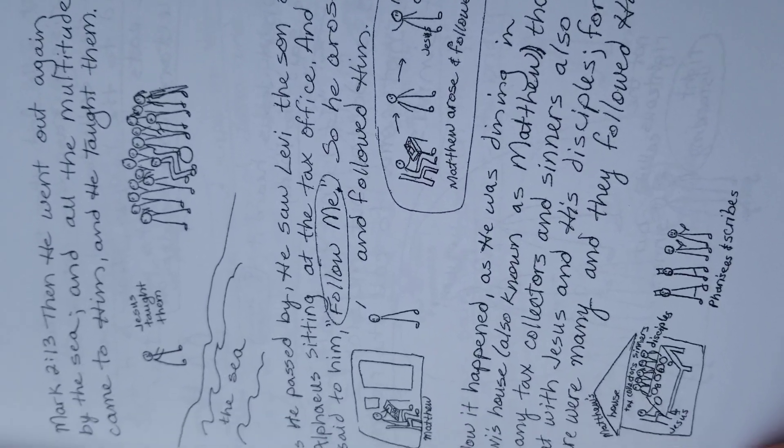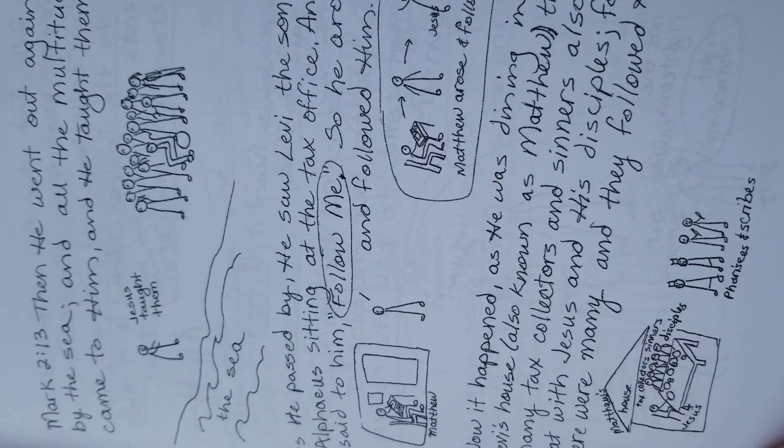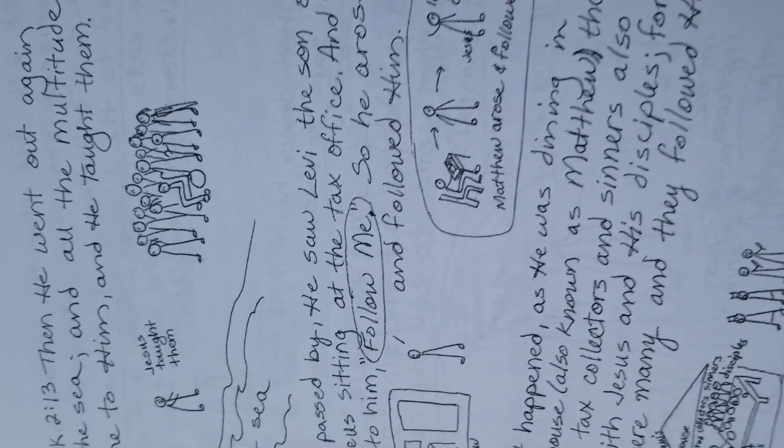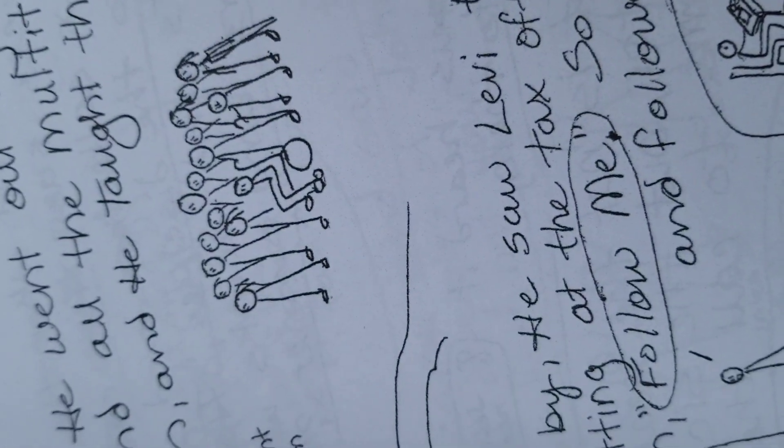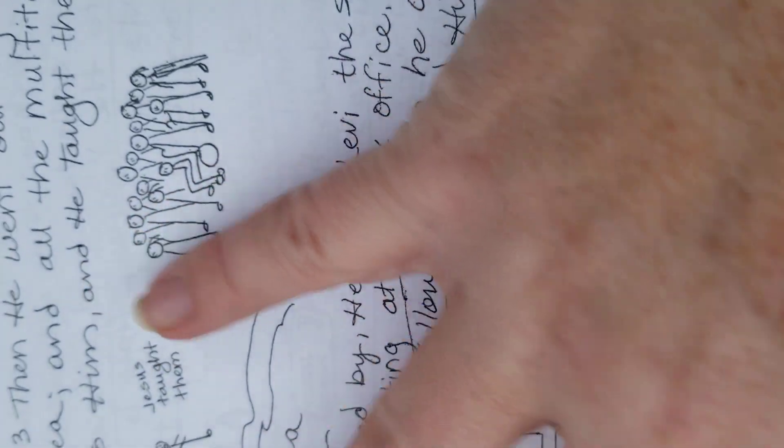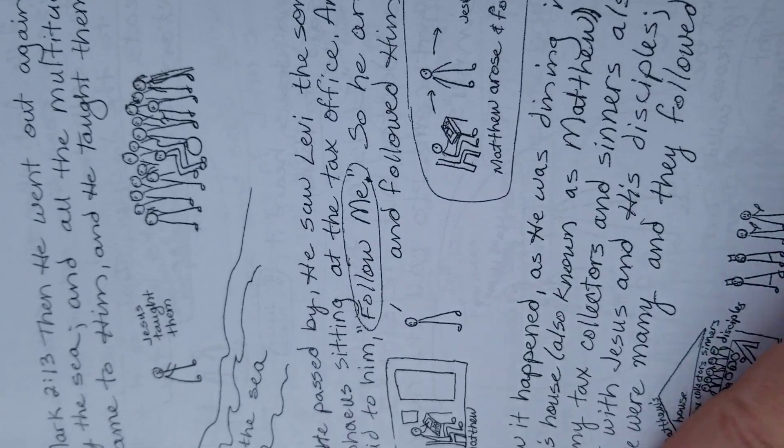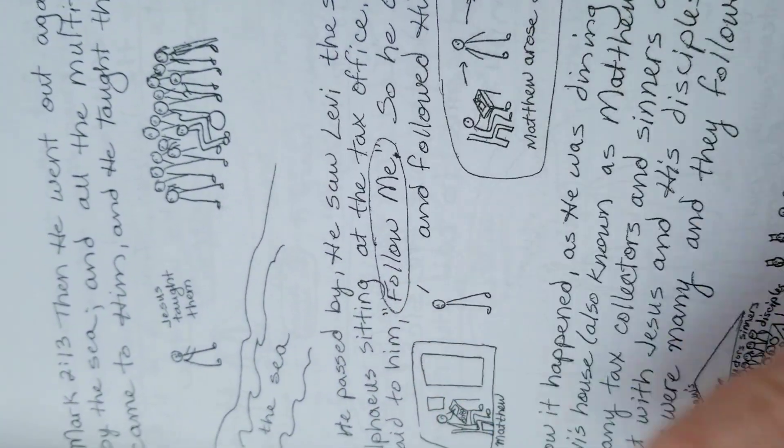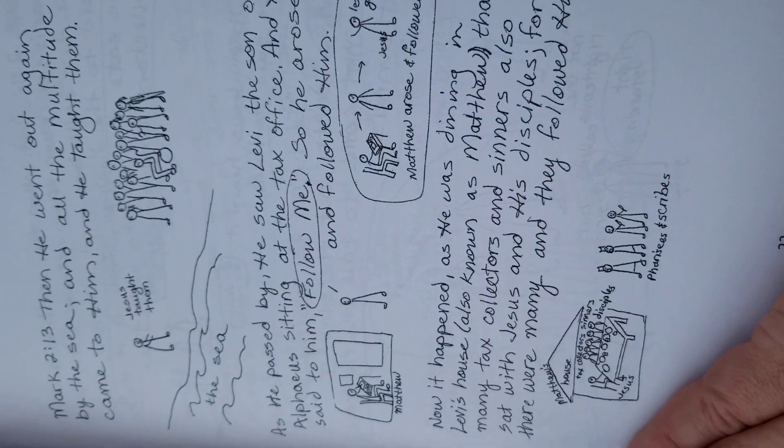So this is Mark 2:13. Then he went out again by the sea and all the multitude came to him and he taught them. So Jesus taught them. He's by the sea. And here's the multitude, the crowd of people. What I write out is maybe in New King James Version, an older version. And then hopefully we all understand it with the pictures in more simpler words.